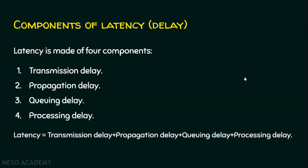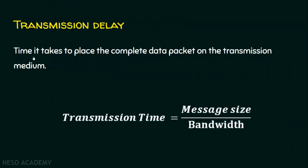Transmission delay means it is the time it takes to place the complete data packet on the transmission medium. How much time it takes for the host computer to place that data packet on the transmission medium is called the transmission delay. The formula is: transmission delay equals message size divided by bandwidth. If we have a better bandwidth, the transmission time will be small. If the message size is big, the transmission time will be high.